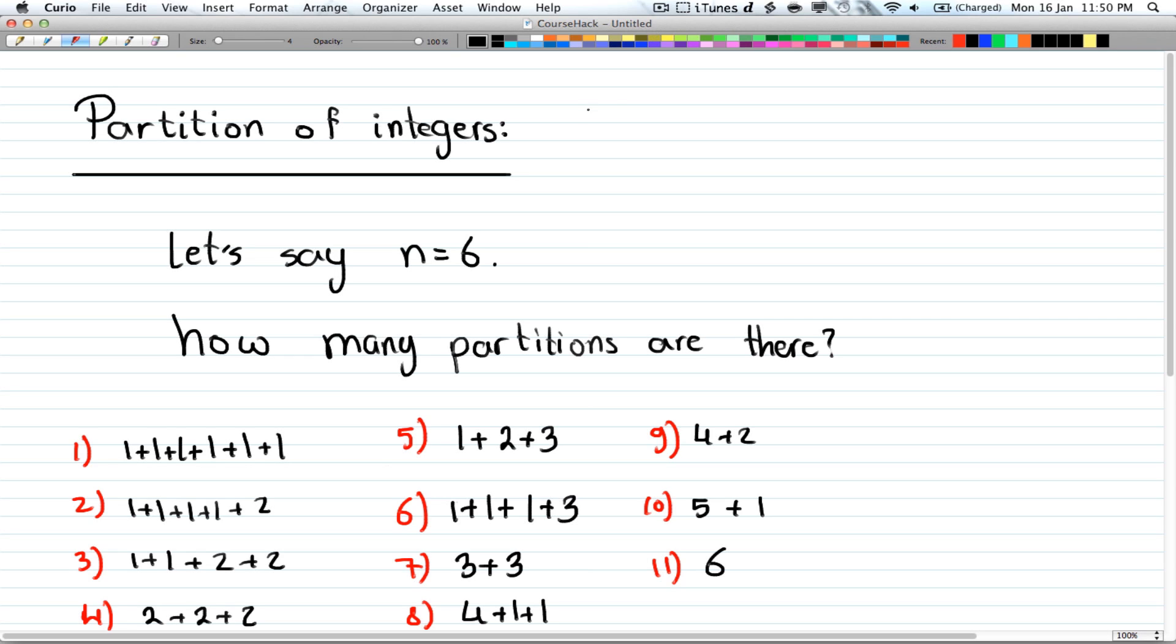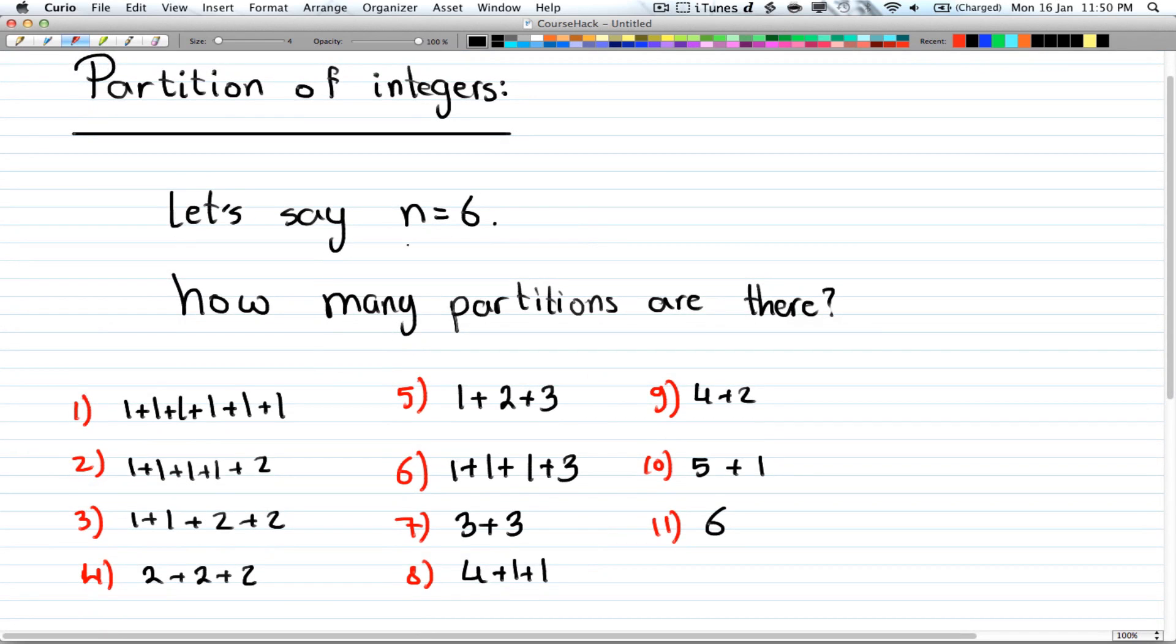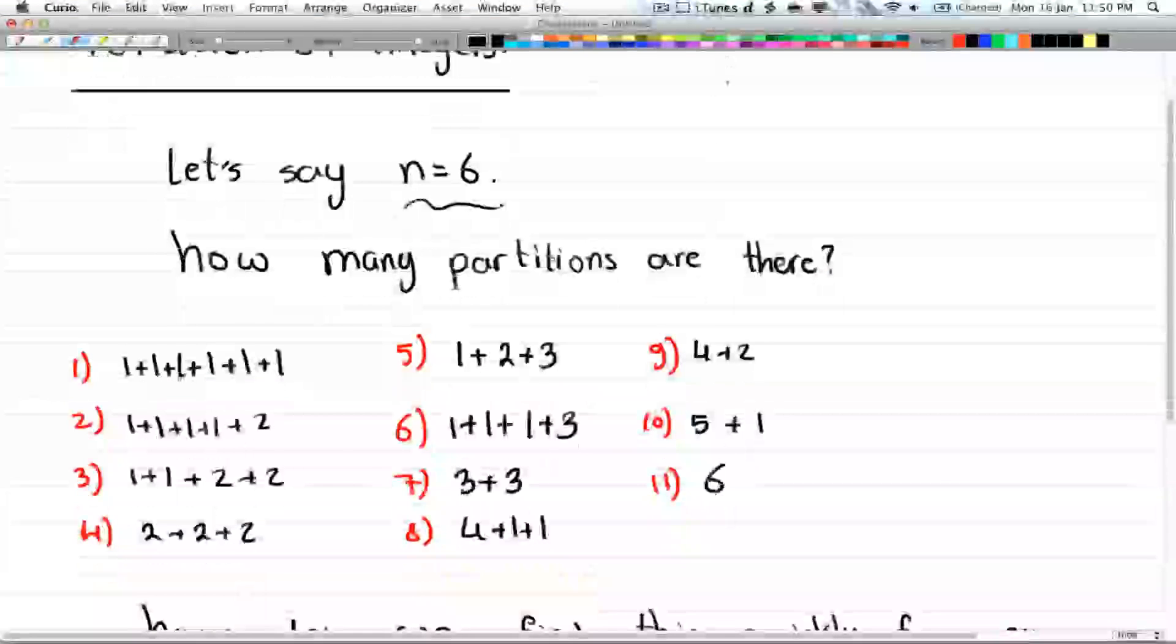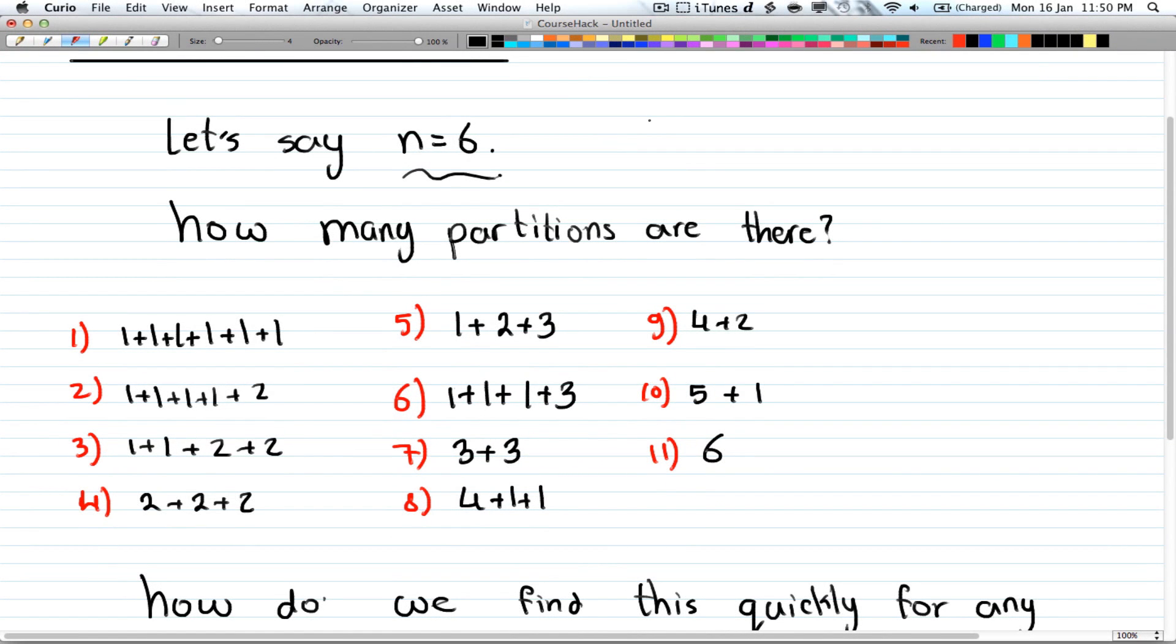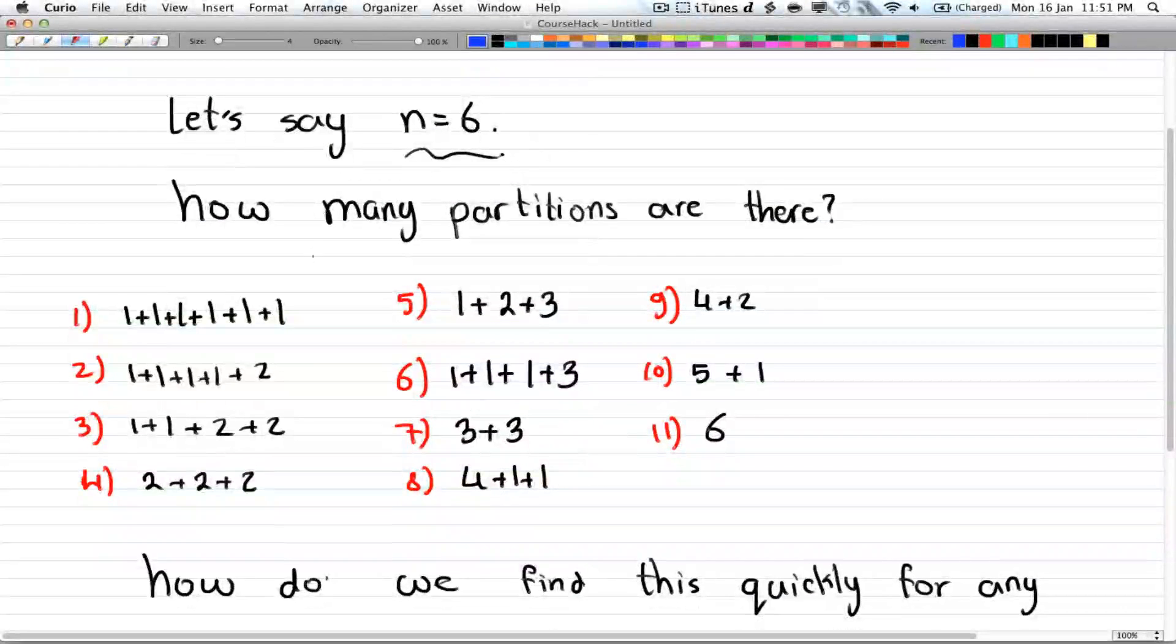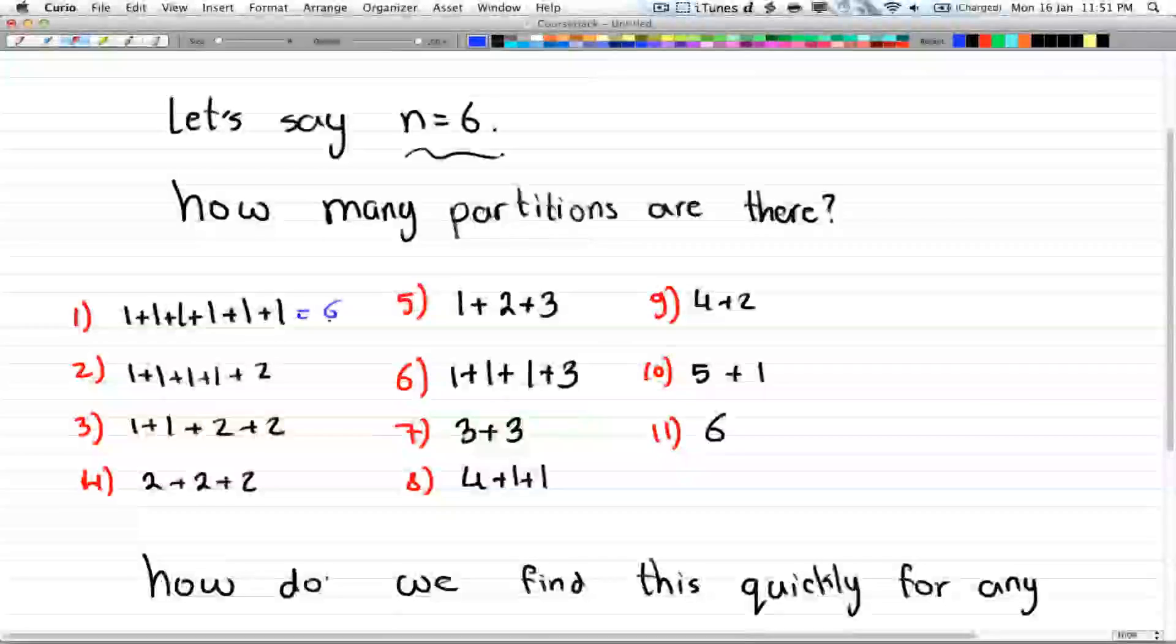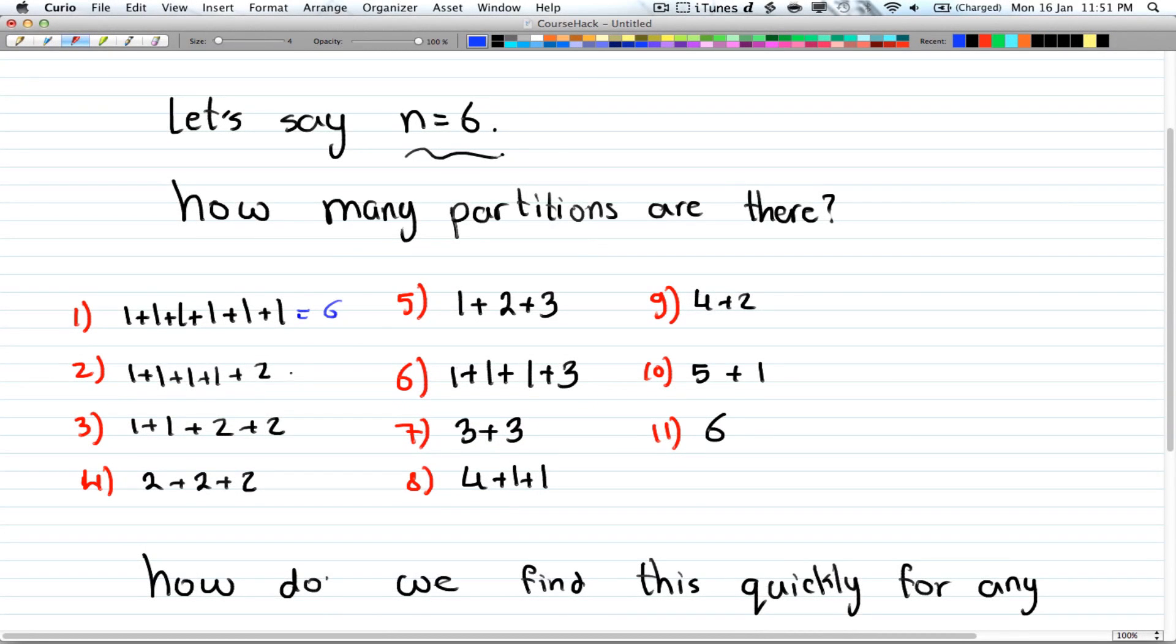Let's say you have a number 6, so n equals 6. How many partitions are there? Partitions are just a group of numbers when you sum them up you get 6. So we have six ones when you add them you get 6, four ones and two you get 6, two ones and two twos you get 6.